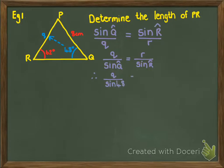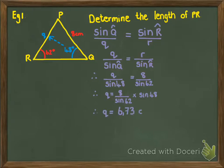Now, all I'm going to do is substitute. q is opposite 48, and r is opposite 62. Now, all I need to do is multiply by sin 48 on both sides, and I've got my answer. So, it's fairly simple.